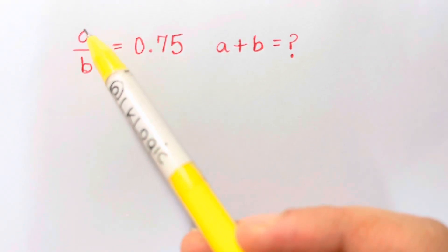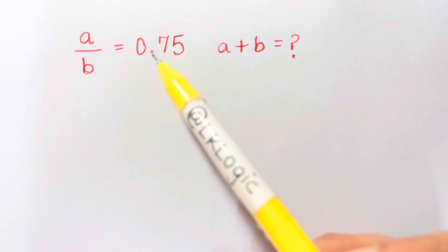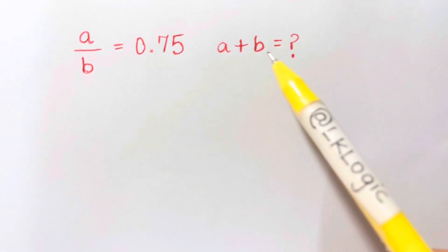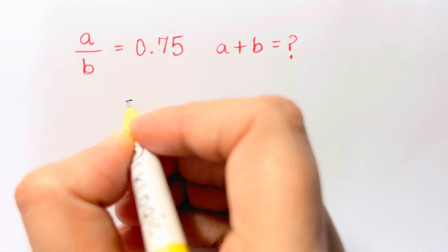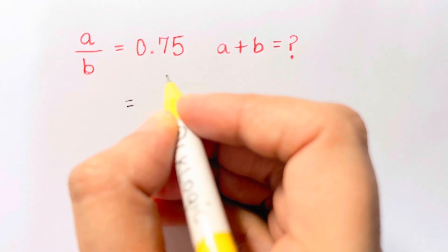Hi guys, here we have a question: a over b equals 0.75, so what is a plus b? Now it's very simple to solve this one. What we have to do is write this 0.75 in terms of fraction.